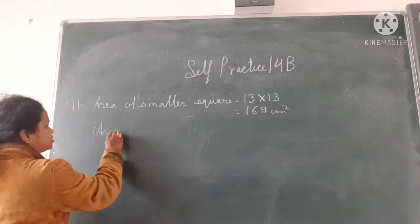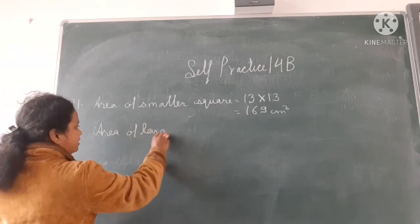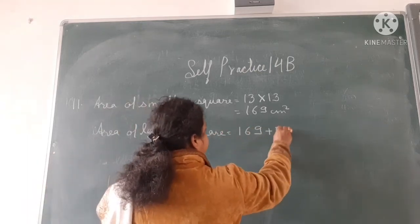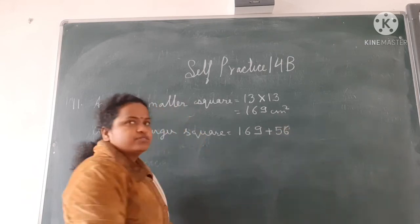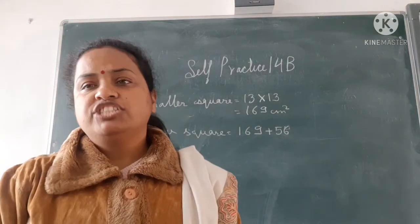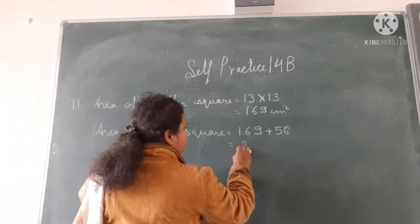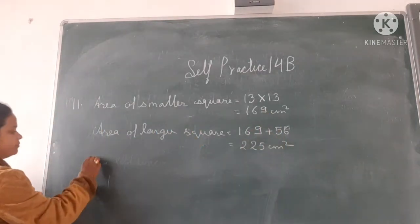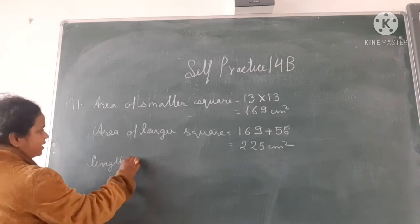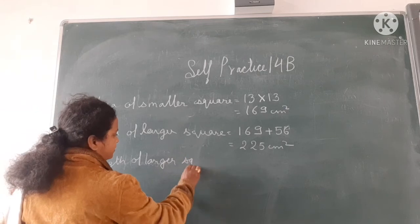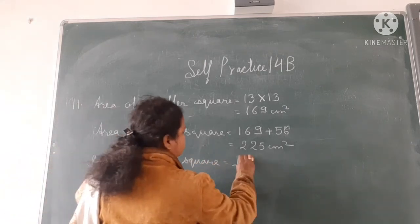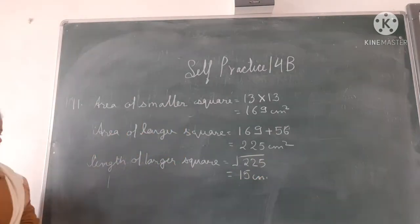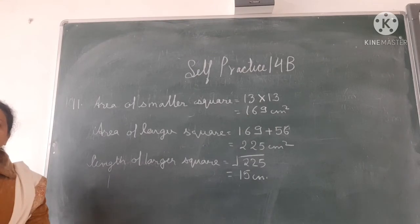Area of larger square equals area of smaller square plus area of the shaded region, giving 225 centimetre square. Length of larger square equals root 225, which is equal to 15 centimetre. So your length for the larger square will come as 15 centimetre.